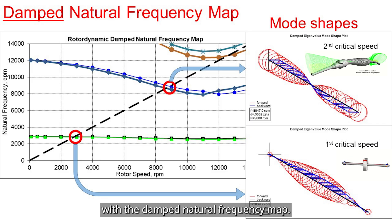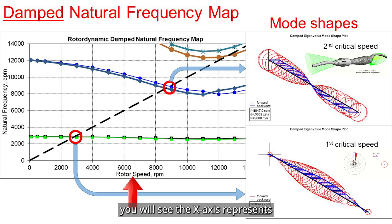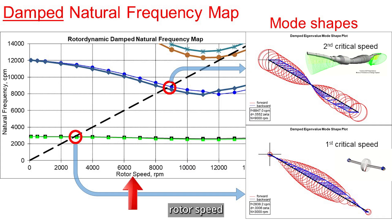Let's start with the damped natural frequency map. If you take a look at this figure, you will see the x-axis represents rotor speed, and the y-axis shows the natural frequency of the system.